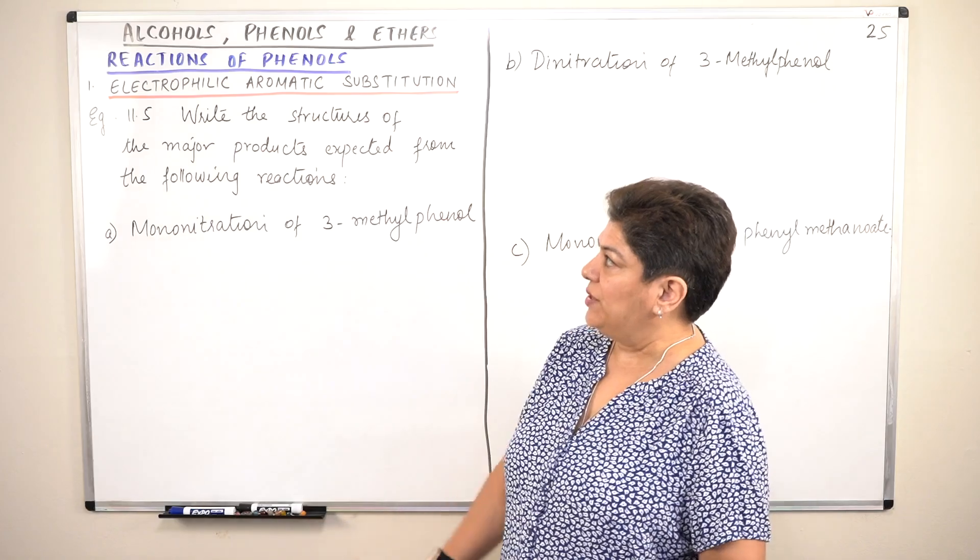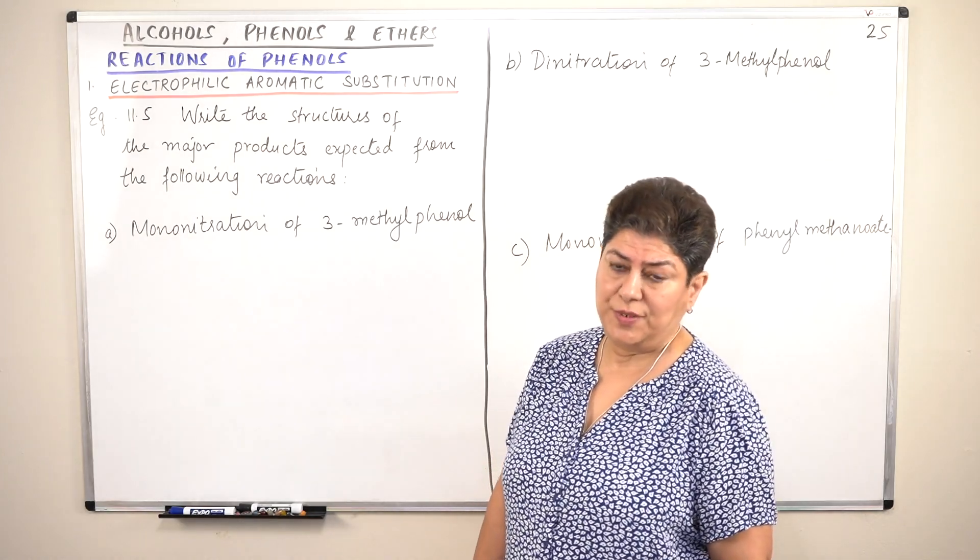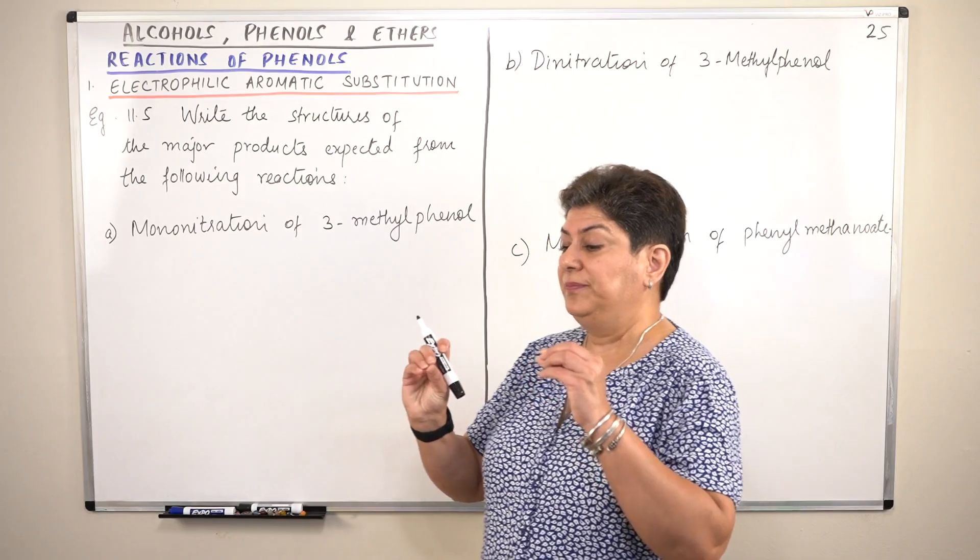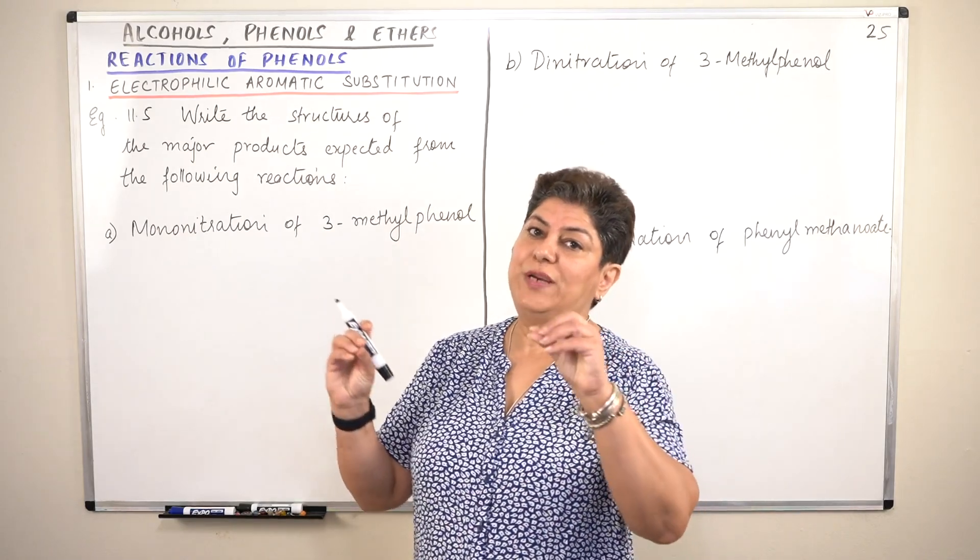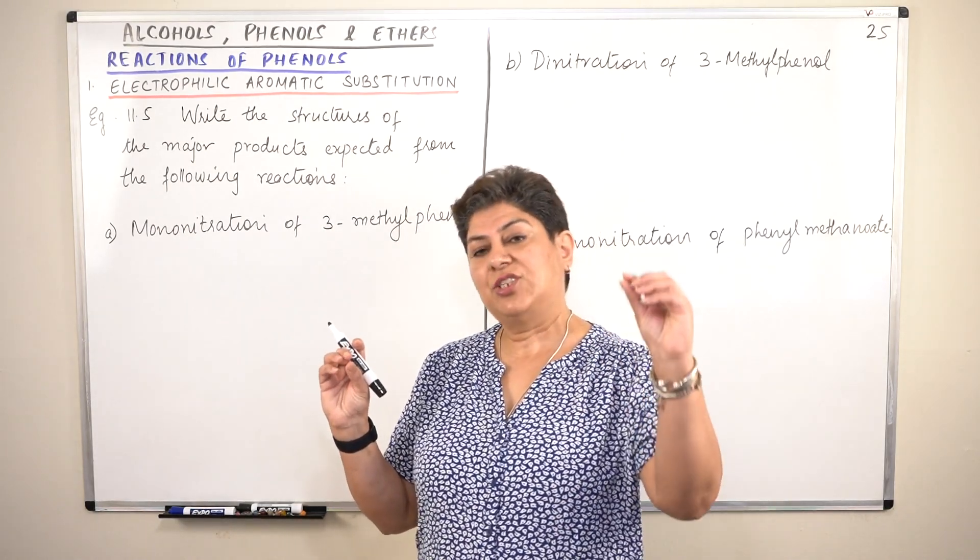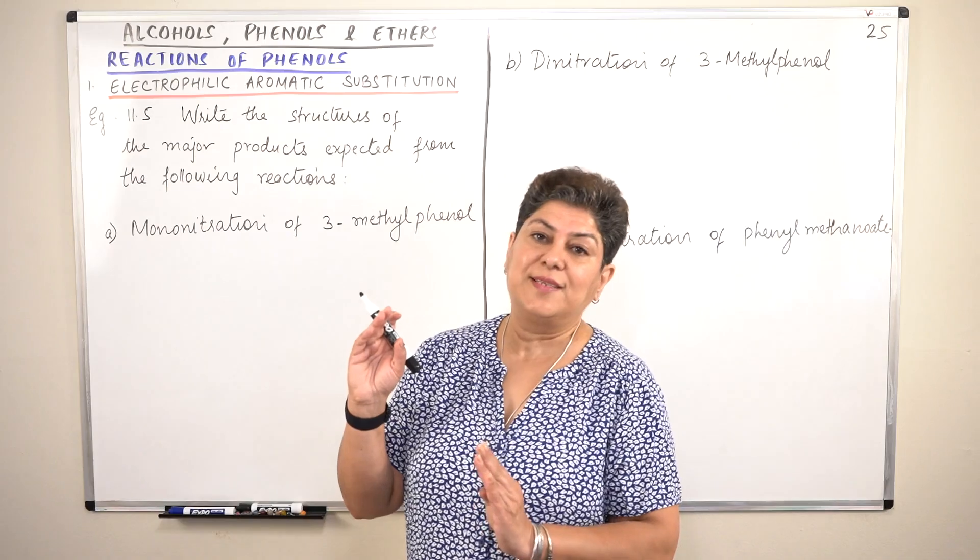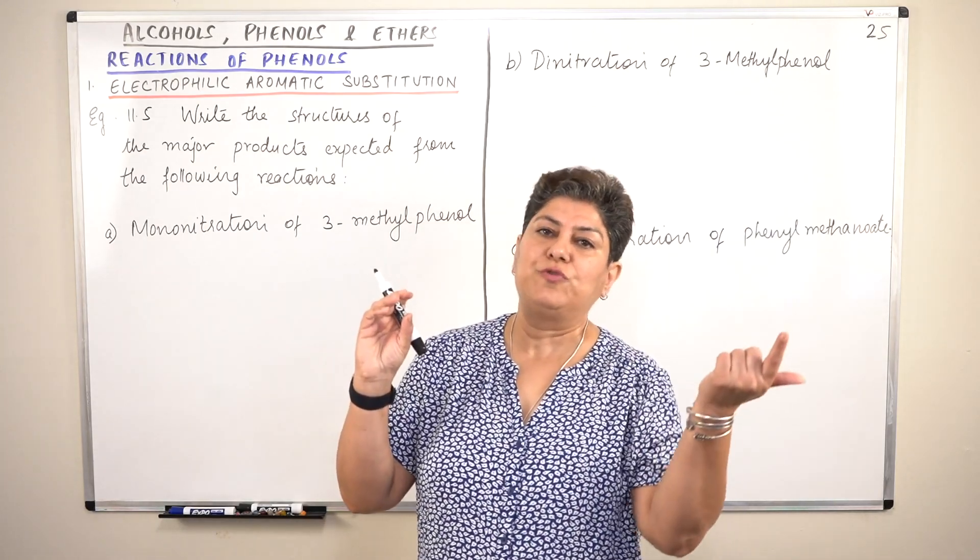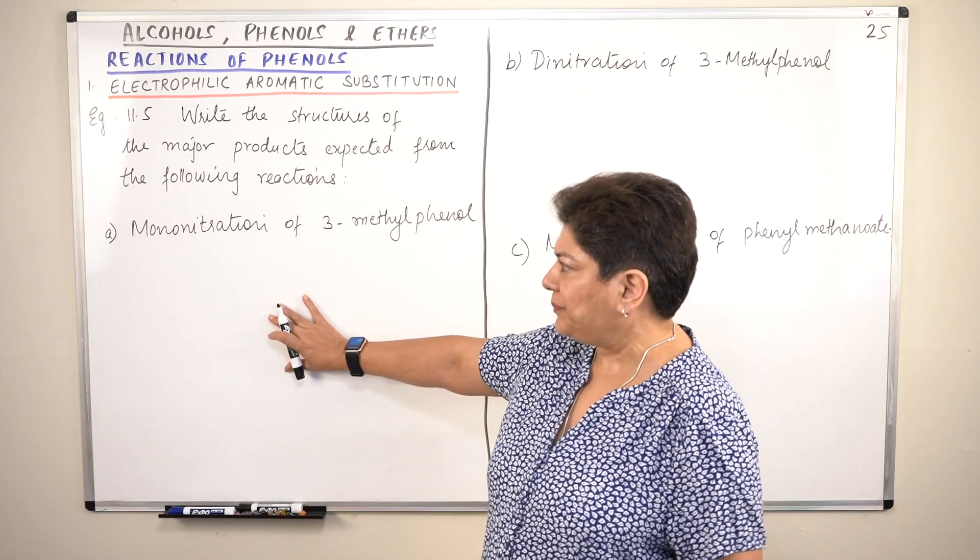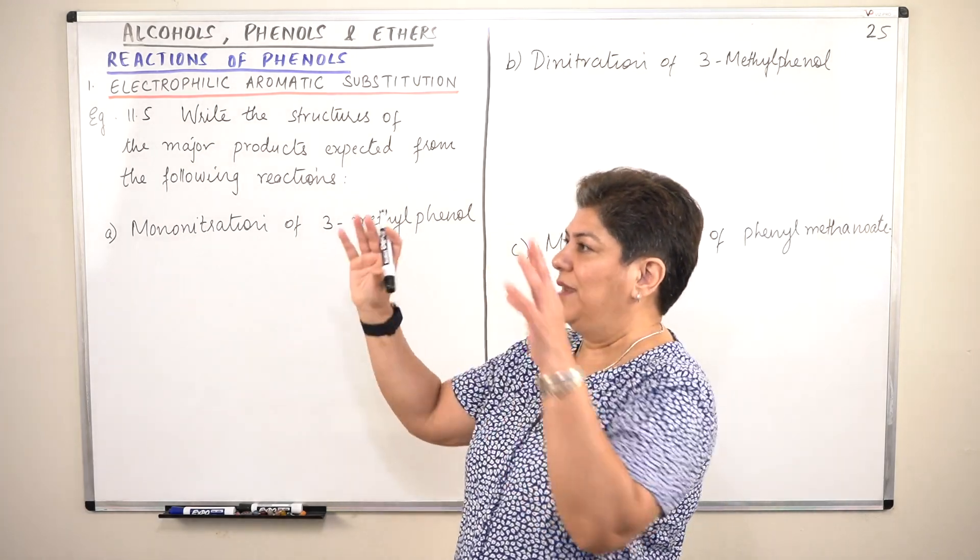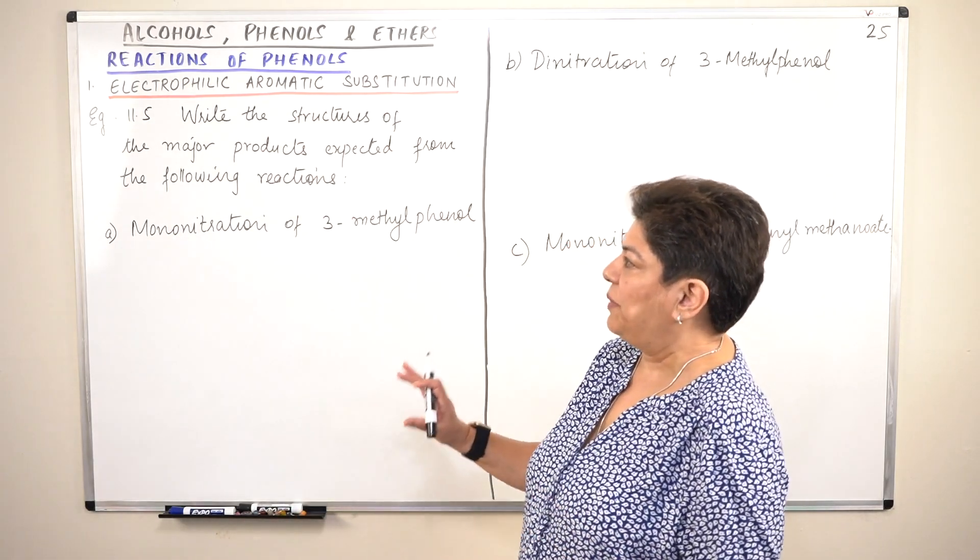So this example is, the question is, you have to write the structures of the major products expected from the following reactions. So we have seen that the OH group which is present in phenols is ortho-para directing, so the substituent, whether it is the nitro group or the halogen, attaches itself either to the ortho position, that is the second carbon, or the para position, that is the fourth carbon, or the sixth carbon. Anyway, instead of theoretically just making you imagine it, let us draw the structures and see.